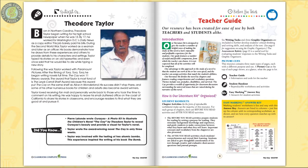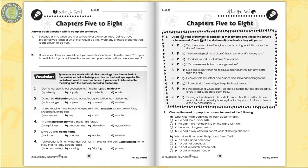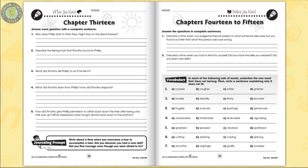Imagine the hindrances experienced by those with a disability and in what ways they are able to overcome them. Identify different statements from the novel as proof Timothy and Philip will be rescued or they will perish. Students share a time when they overcame a fear to accomplish a task.